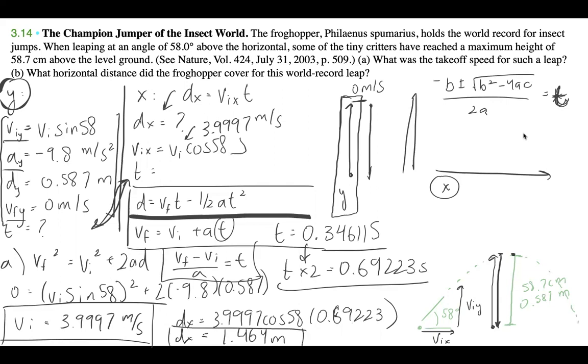So yeah, that's our solution. So we have our takeoff speed, which is 3.997 meters per second. And then we have our horizontal distance covered, which is 1.464 meters. I hope that was helpful.